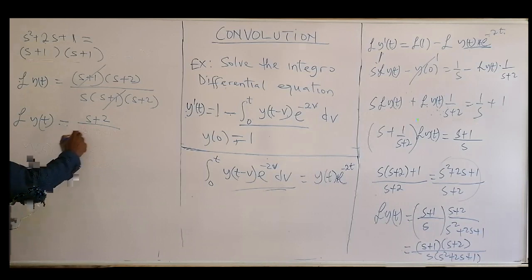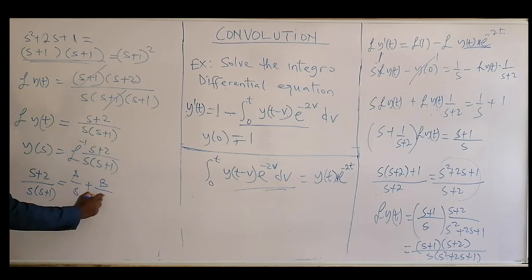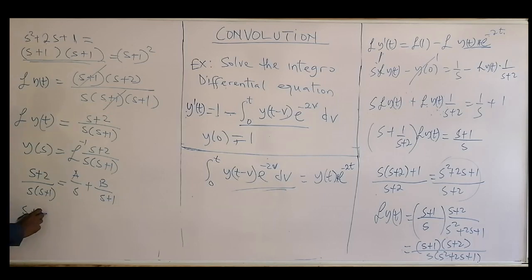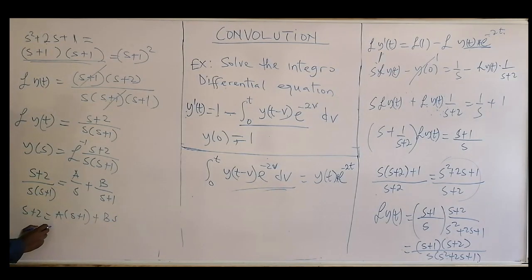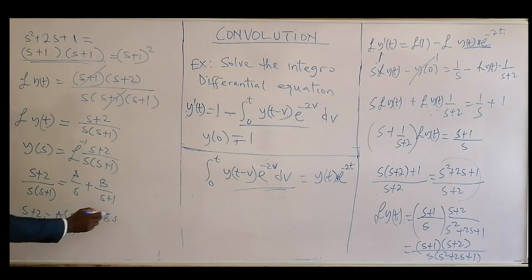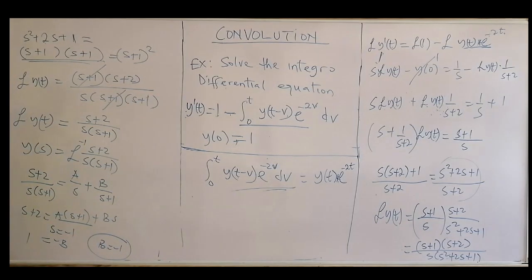Using partial fractions: (s+2) over s(s+1) equals A/s plus B/(s+1), giving A(s+1) + Bs = s+2. Let x = -1: then -B = -1 + 2 = 1... wait, -1 + 2 = 1, so -B = 1, meaning B = -1.